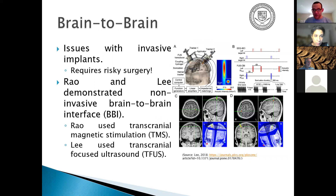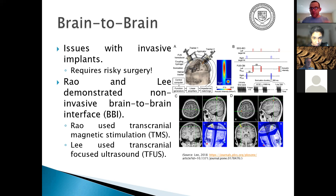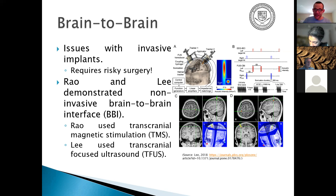The problem with invasive implants is that surgery is often required with materials that are not biocompatible and evoke an immune system response. Rao and Lee demonstrated you could have non-invasive brain-to-brain interfaces which don't require any drilling into the skull — just wearing devices on your scalp using transcranial magnetic stimulation, which uses an electromagnetic field to induce a current inside the brain right through the skull.